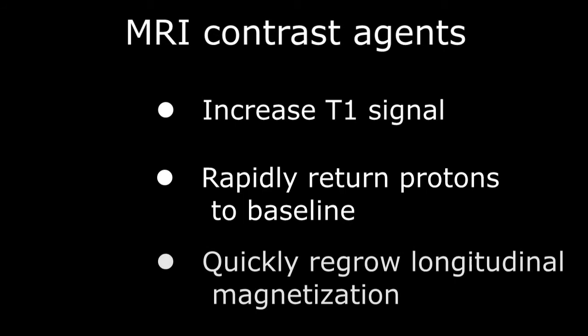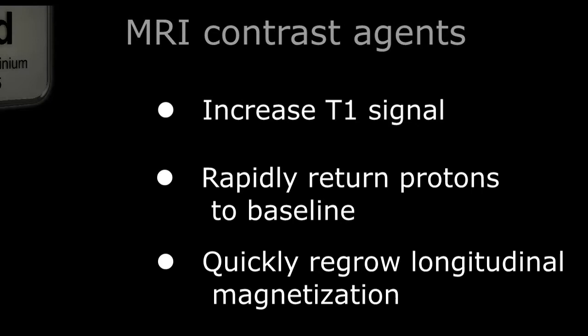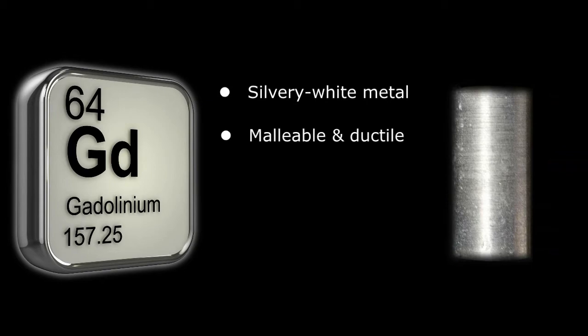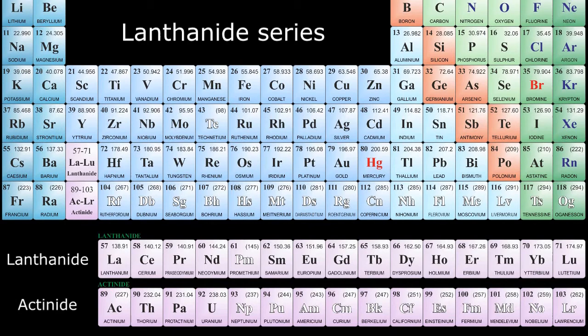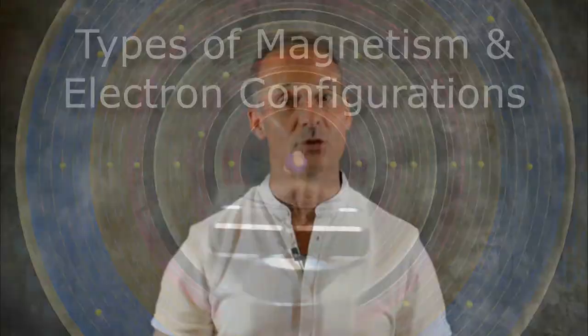Gadolinium is a silvery-white malleable and ductile metal with an atomic number of 64. On the periodic table, it's part of the lanthanide series classically listed at the bottom of the main table along with the actinide series to provide some symmetry to the table itself.